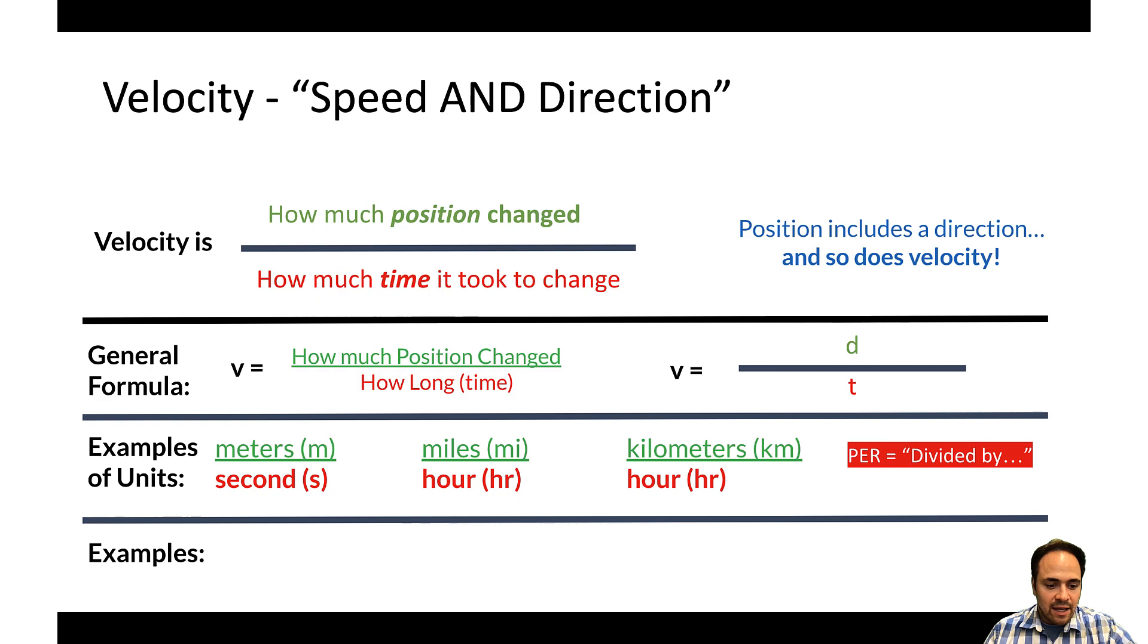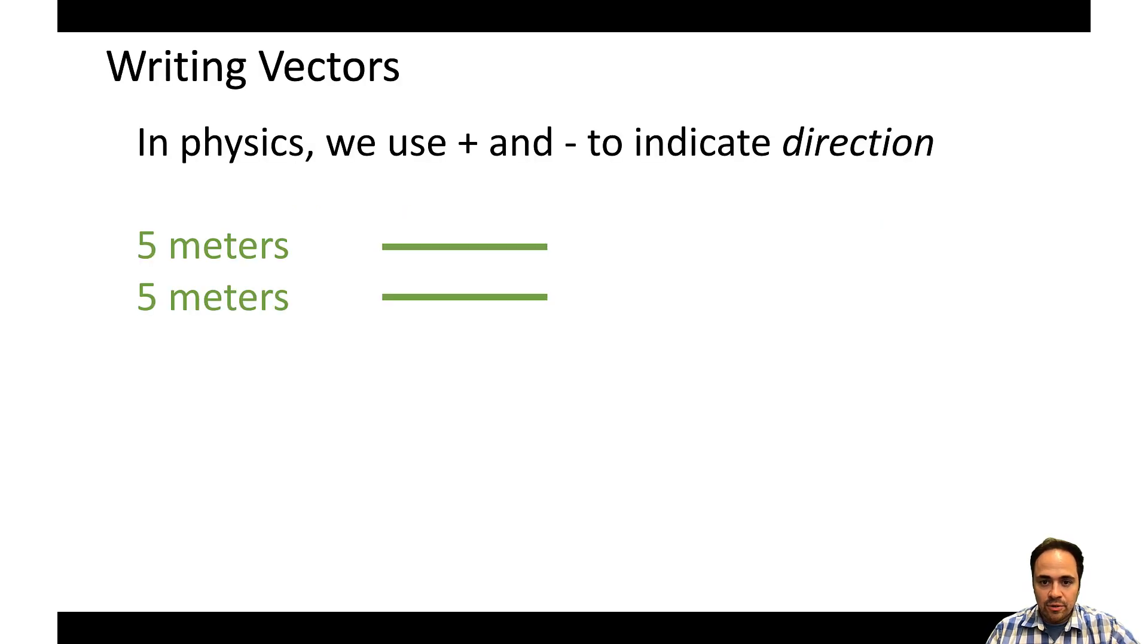Now if I want to write these in numbers, I could say three meters per second forward, I could say negative two meters per second. And you might be caught off guard when you see the negative. Why? What's a negative for? Well, in physics, we use positive and negative symbols to indicate the direction. So in the example here on the screen, I have two lines representing five meters. If I wanted to give a direction as well, I could draw arrows. I need to indicate that with the numbers too. So in this case, I'll use a plus for rightward, and I can use a negative for leftward. By using positive and negative as directional components, I can include the direction as part of the number.